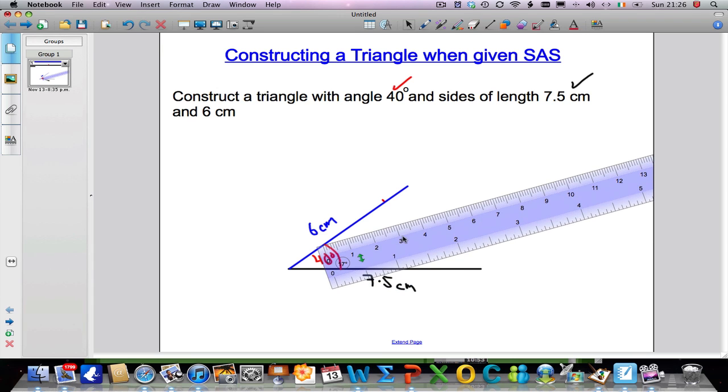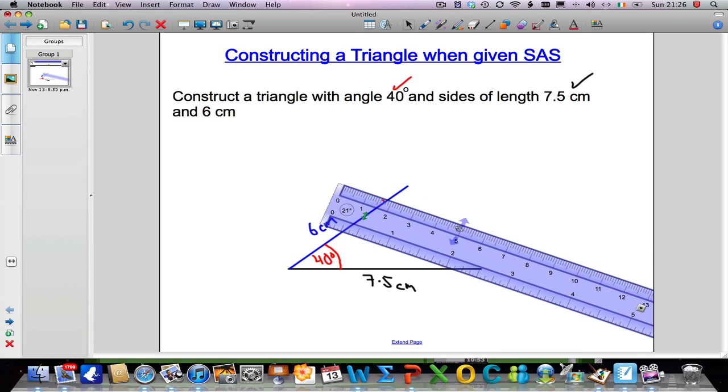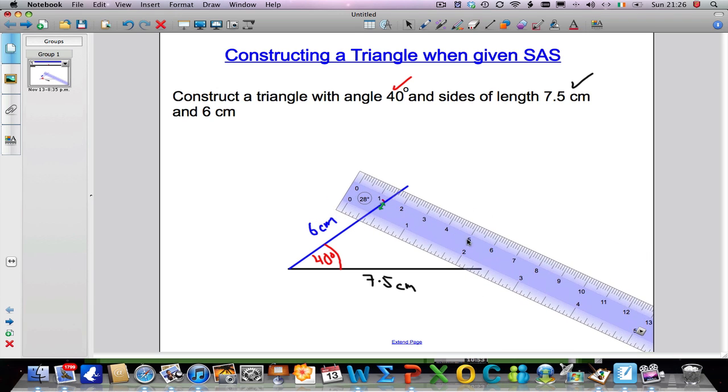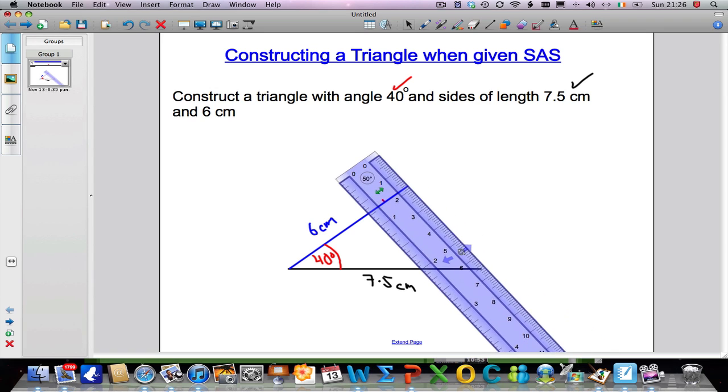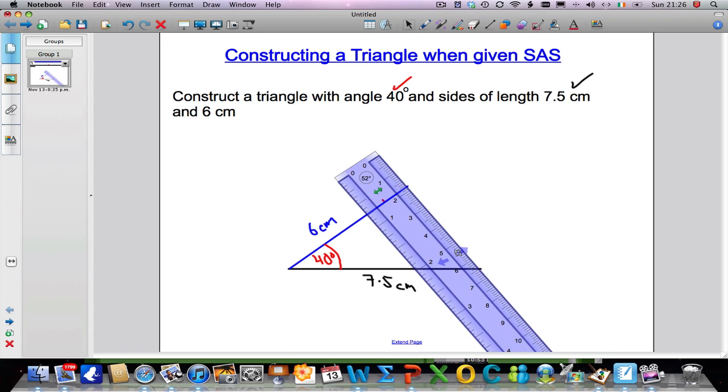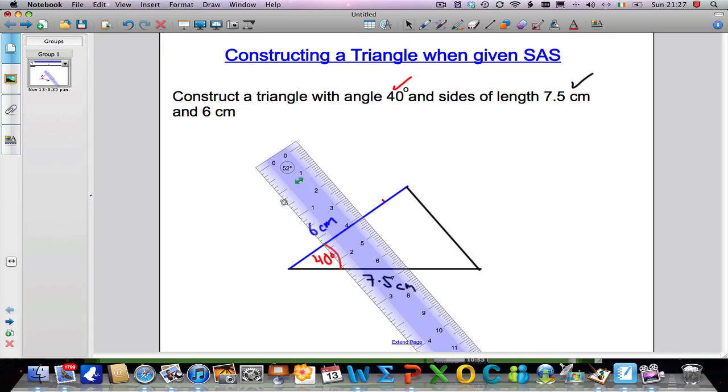Last step is to use a ruler and just draw the remaining part of your triangle. There's no actual measurement required here because the three pieces of information we've given have made our triangle. I'm just going to use black and connect up the rest of our triangle. And we have now completed the problem.